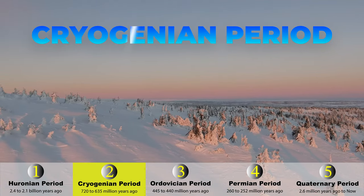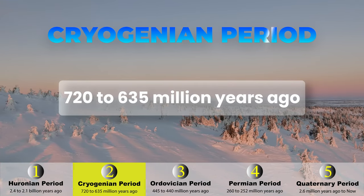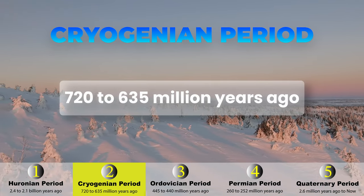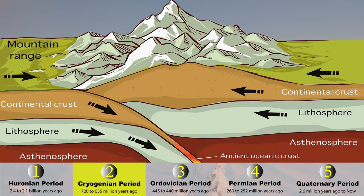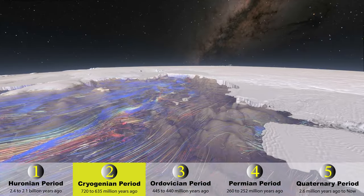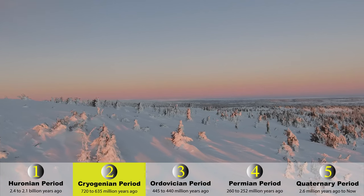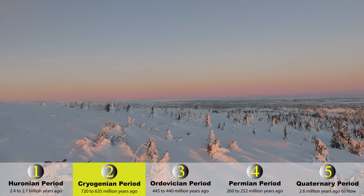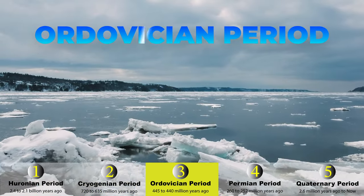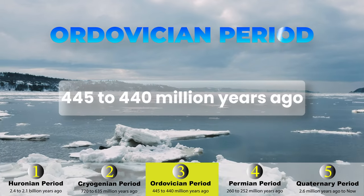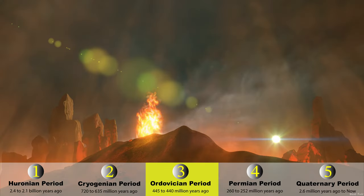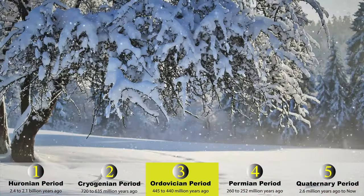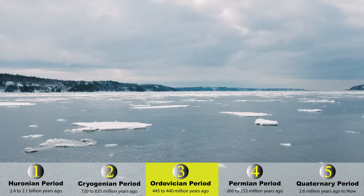The second ice age was the Cryogenian period, between 720 and 635 million years ago — Earth's second snowball fight. Land masses collided, ocean currents shifted, and the planet dipped into a deep freeze, with glaciers reaching the equator. The third ice age was the Ordovician period, between 445 and 440 million years ago — another icy waltz triggered by volcanic activity and continental drift. Oceans froze, life clung to survival, and the Earth shivered in its third major ice age.